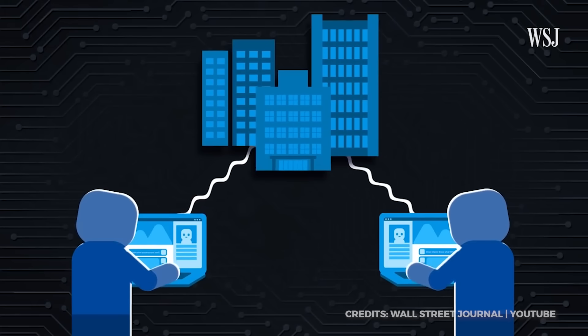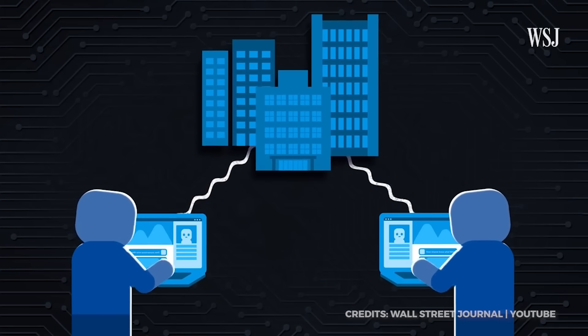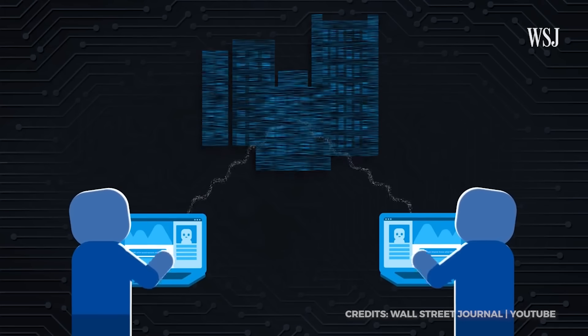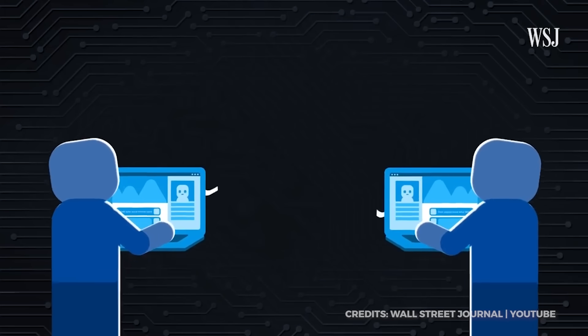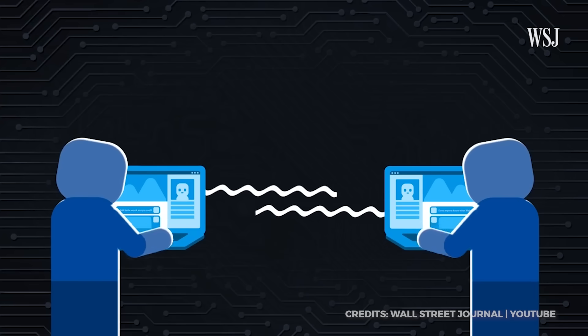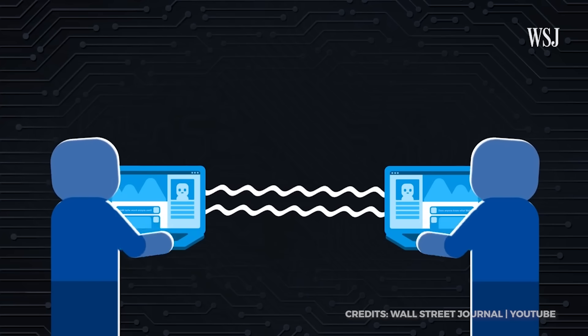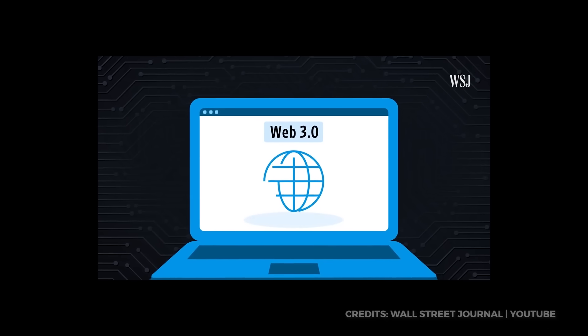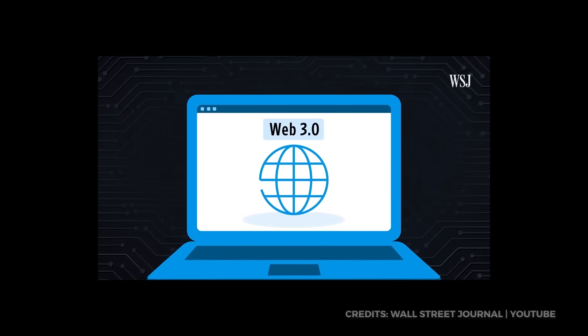While shareholders can vote on changes to prices or how things are governed, no individual can actually change the encoded rules without permission — not even those who own the servers. As such, DAOs eliminate the need for centralized command or middlemen like bankers, accountants, lawyers, and landlords. The power of decentralized Web 3.0 lies in the hands of the people.